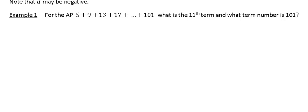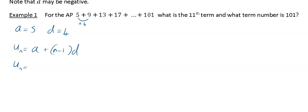First thing you've got to do is write down what A and D are. A is the first term, which is 5. D is the common difference — you get from 5 to 9 by adding 4, so D = 4. The general term is therefore U_N = 5 + 4(N − 1).